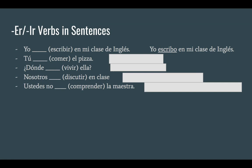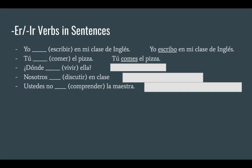Now we're going to do 'comer' in the tú form. We take away the ER from comer and add the ending for tú, which is 'es'. So tú comes el pizza — you eat the pizza. See? Easy. We got this.